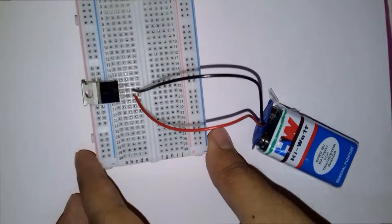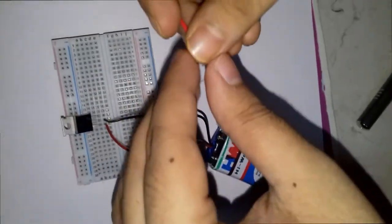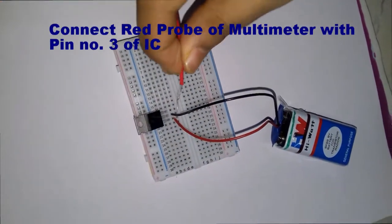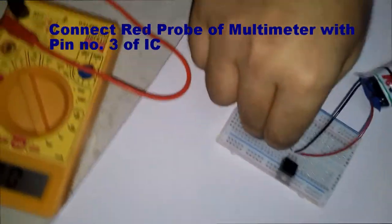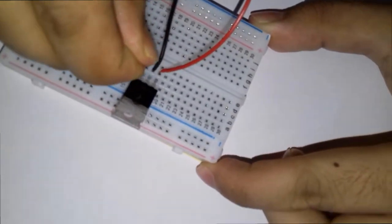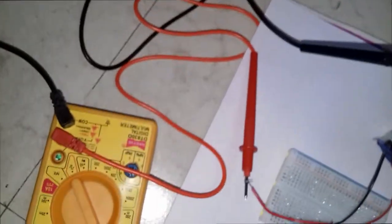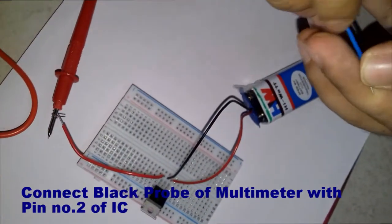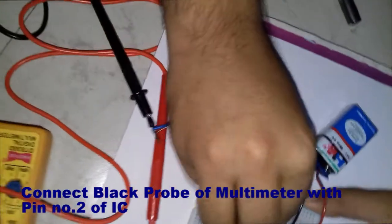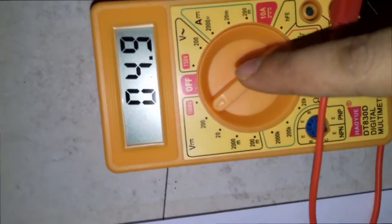Then we will measure the output voltage with the help of multimeter. We are connecting the red probe of the multimeter to pin number three of IC7805, and the black probe of the multimeter to pin number two, that is ground pin. And as we can see, the voltage is regulated and the output voltage is 5V.